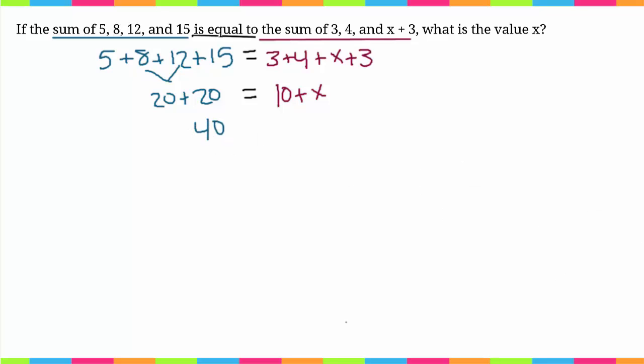Now I'm going to subtract 10 from both sides, so I'm going to get 30 is equal to x. Oops, I used the wrong color—is equal to x. Okay, great. So this here is going to be my final answer.